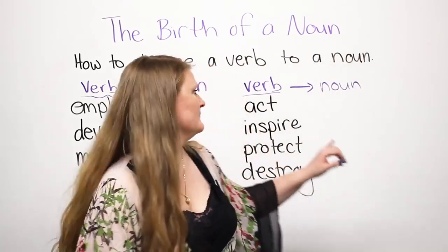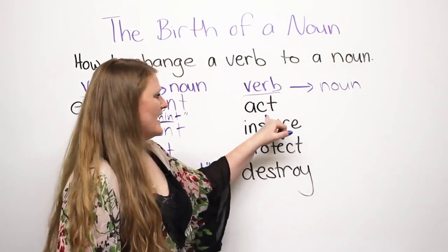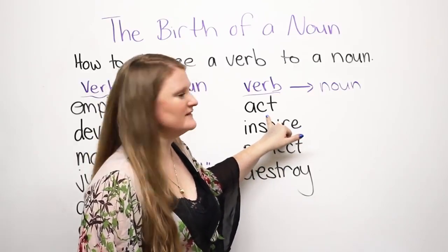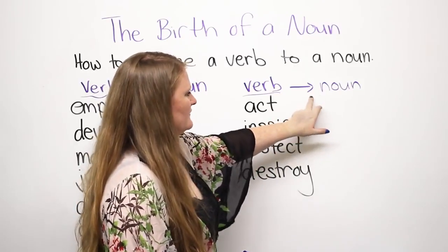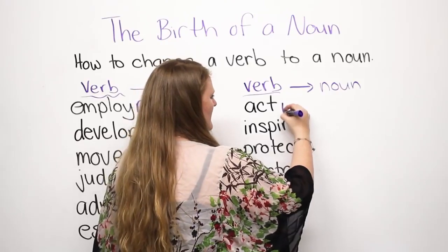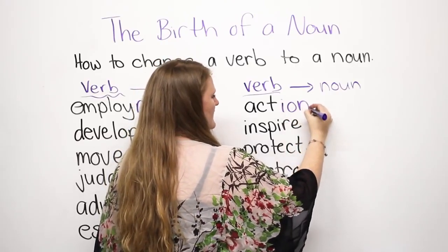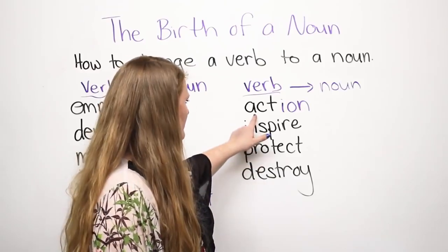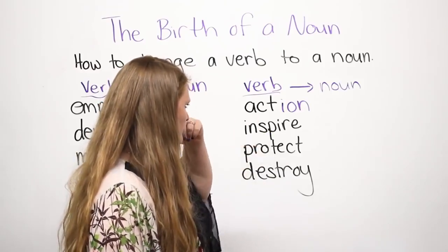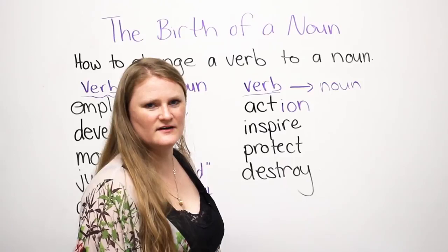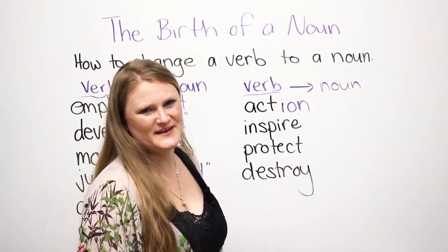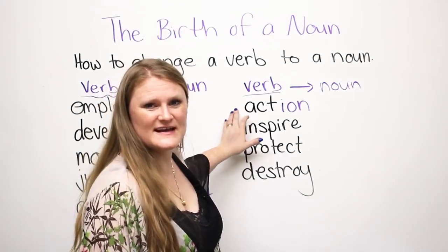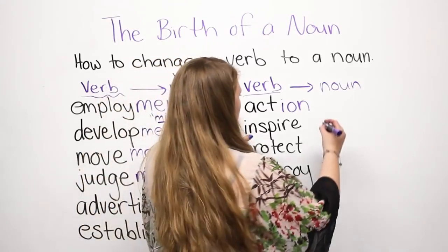The next word is act. The other way to make a verb into a noun is to add I-O-N. So when you look at this word it looks like 'acton,' but it's actually said 'action.' Once again, English pronunciation is very strange.